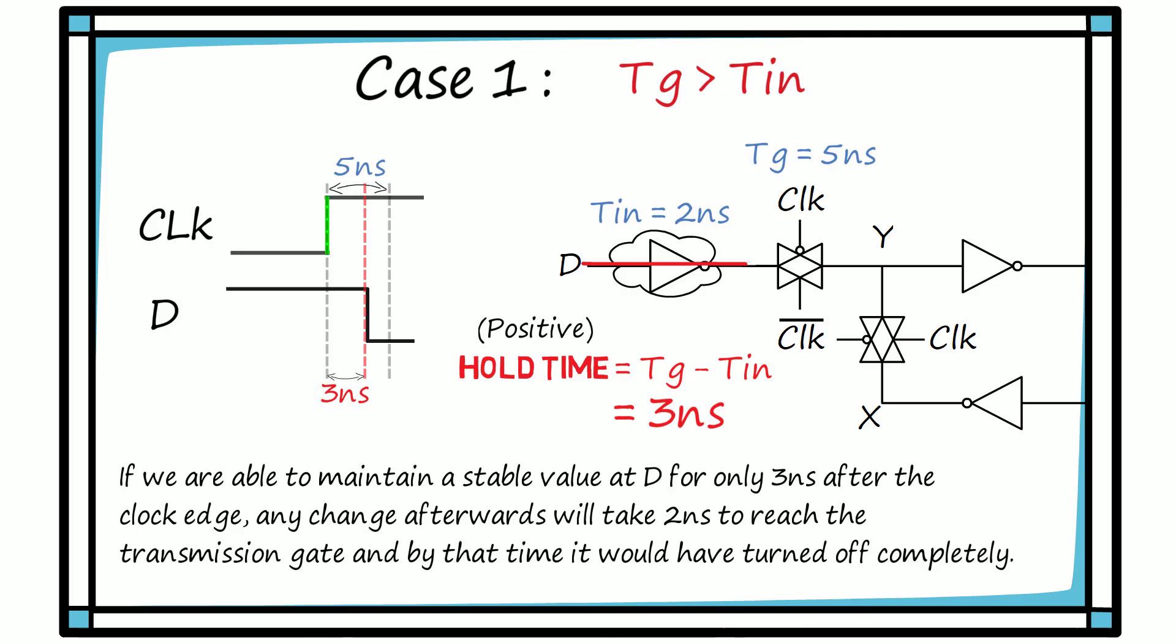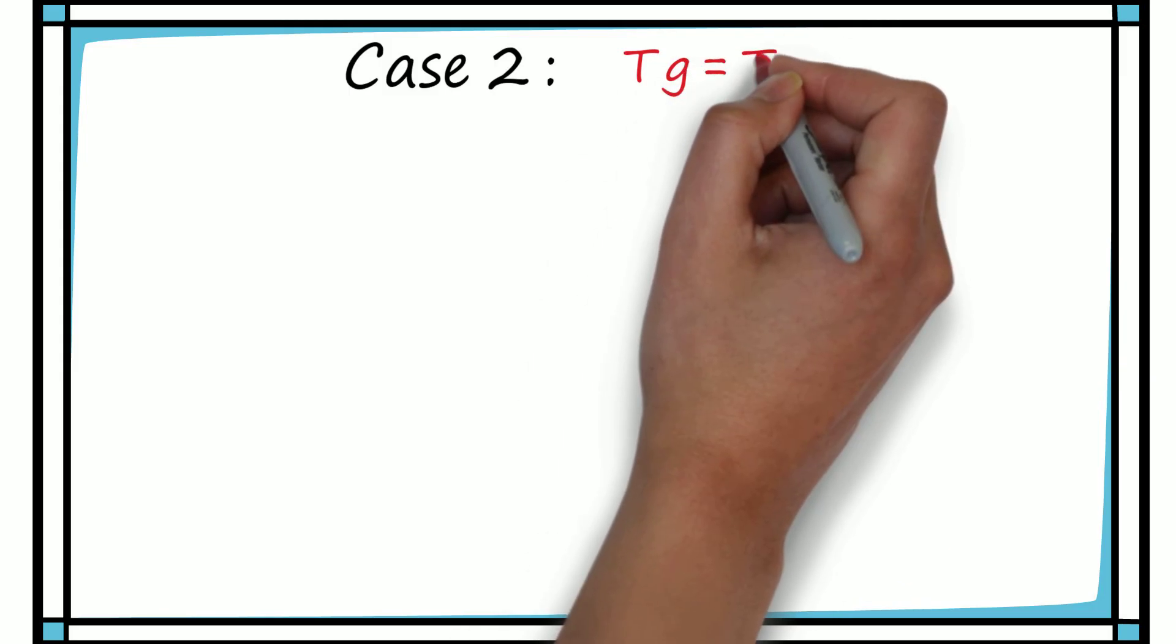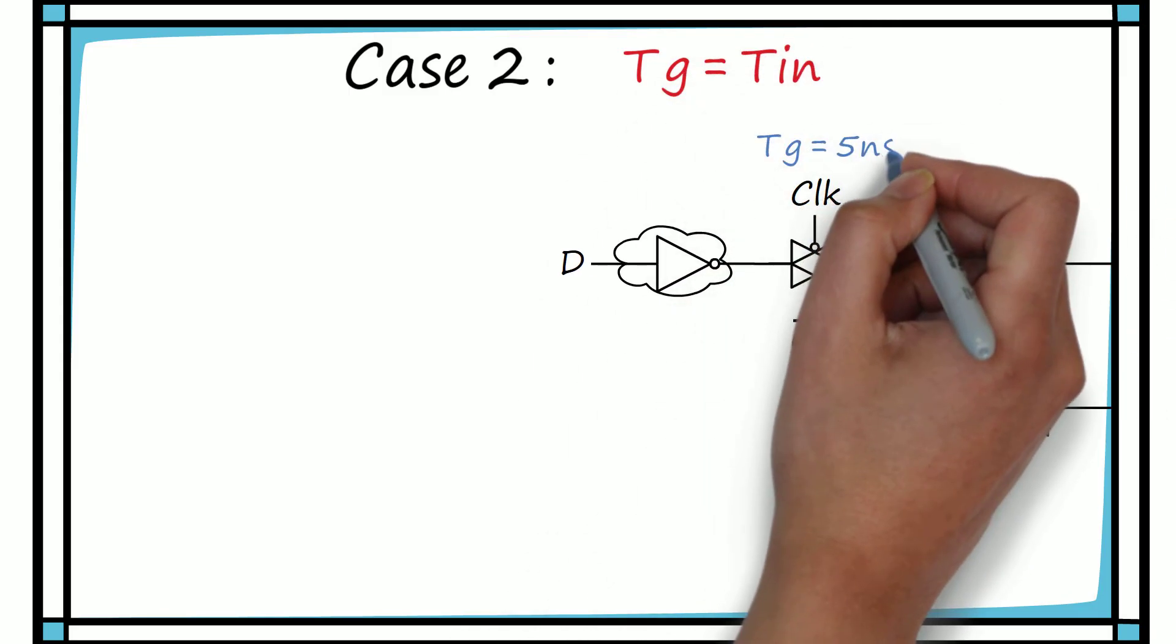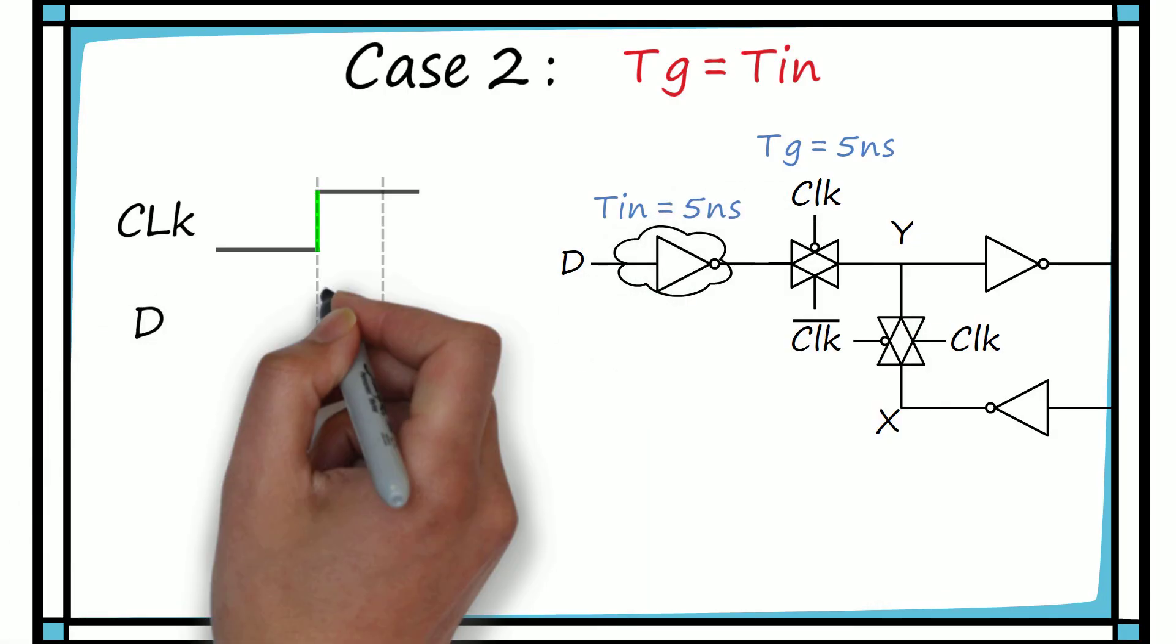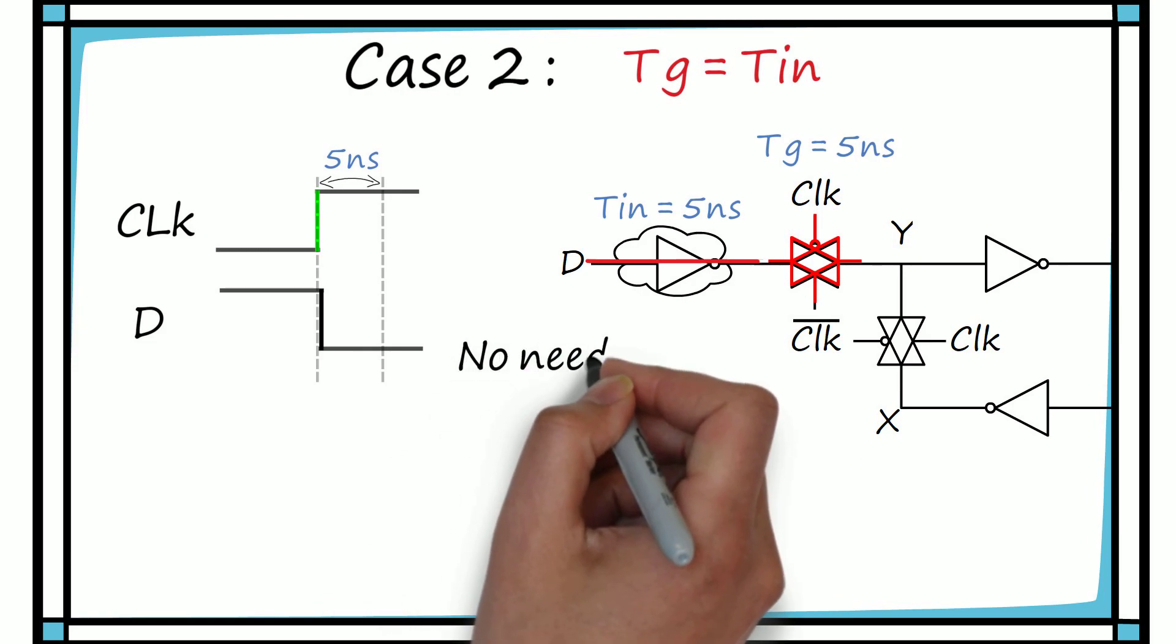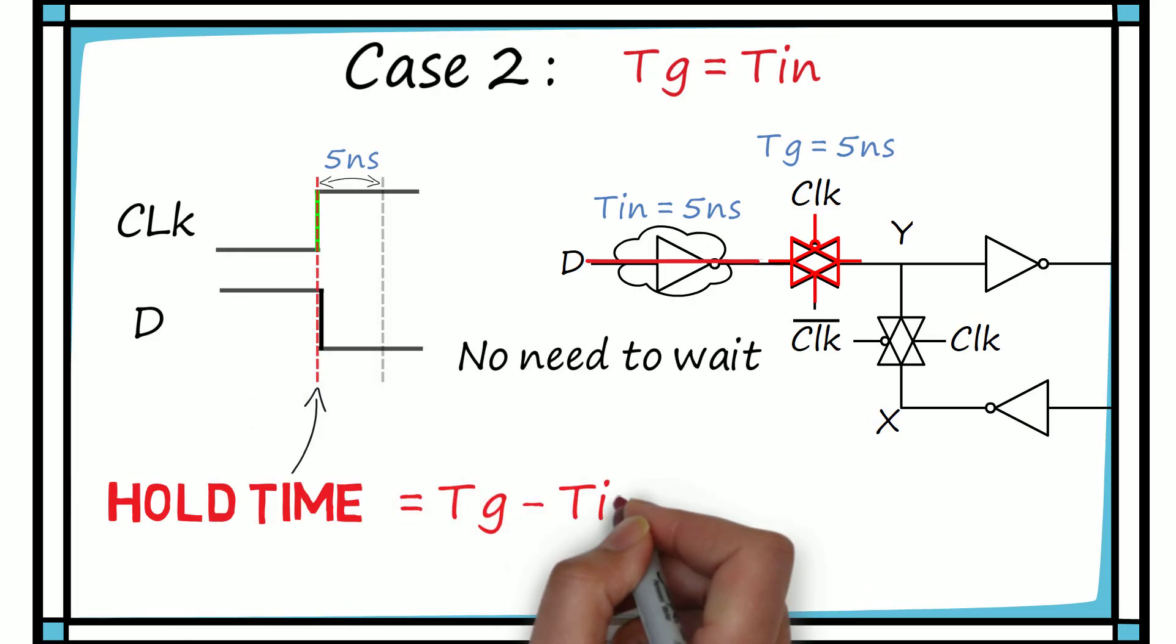Now, moving on to the second case. Here, the data path delay is equal to the transmission gate switching delay. Let us take both these delays to be 5 ns. Any change in the data input after the clock's active edge arrival will take 5 ns to reach the transmission gate. But the transmission gate would have been turned off by that time because it also took 5 ns to turn off completely. Hence, there is no need to wait at the D input. The hold time in this case comes out to be 0.